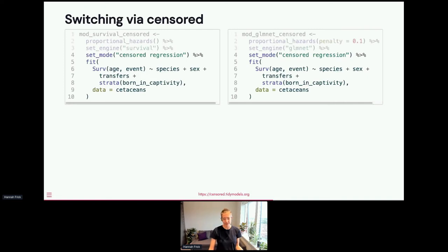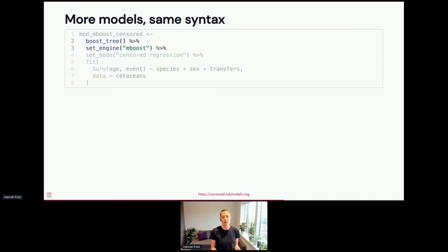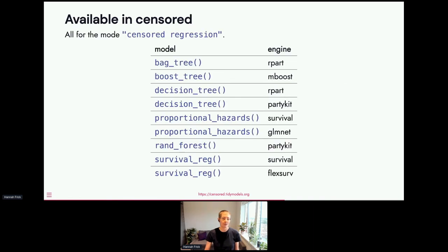And that's obviously not the only switch in model type that we want to facilitate and make easier. The rest follows on the tagline, more models, same syntax. So even if you want to go to something very different and pick one of the tree-based ones and say, well, I like boosted tree for a survival problem and I'm going to fit that with the mboost package, then these are the two lines that you need to change. And that obviously leads us to the question, what is actually available? They're all for that new mode, censored regression, but it's the proportional hazards model that we've seen initially as the semi-parametric ones. The parametric models are in the survival_reg function. And then for tree-based, you can have decision trees of different flavors or engines fitting them, bagged trees, random forest, boosted trees. And that's the collection of models that are available in censored right now.